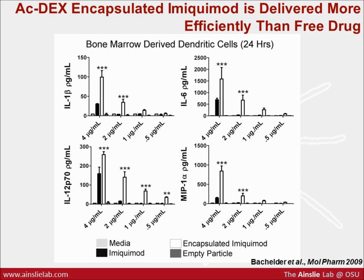Ac-dex is also a benign polymer. Looking at different inflammatory cytokines — interleukin-1-beta, interleukin-6, interleukin-12, and MIP-1-alpha — these are pro-inflammatory cytokines measured in bone marrow-derived dendritic cells. The black bars indicate free drug and the white bars indicate drug encapsulated in ac-dex microparticles. At a given concentration of drug, there's actually significantly greater activation with the encapsulated drug compared to the free drug. This tells us we're getting a dose-sparing response — less drug is needed to activate the cells compared to the free drug alone.